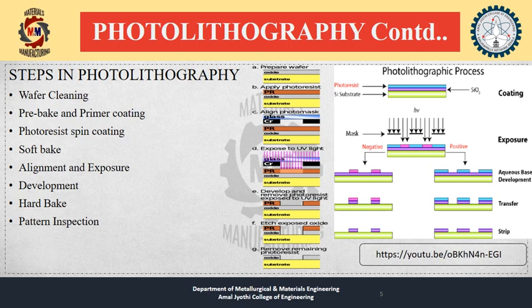The photoresist-coated wafer is then pre-baked to drive off excess photoresist solvent, typically at 90 to 100 degrees Celsius for 30 to 60 seconds on a hot plate.